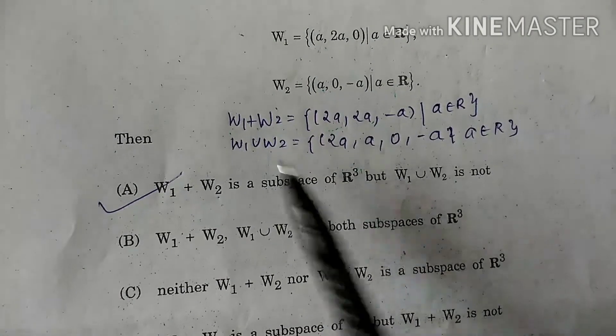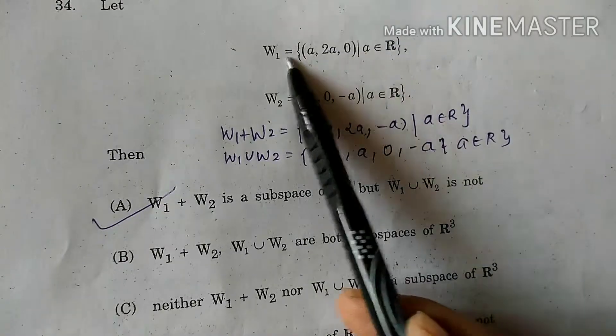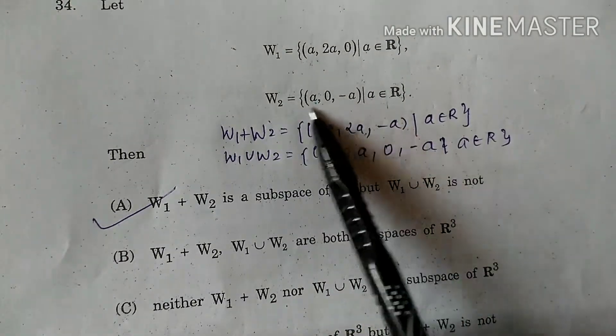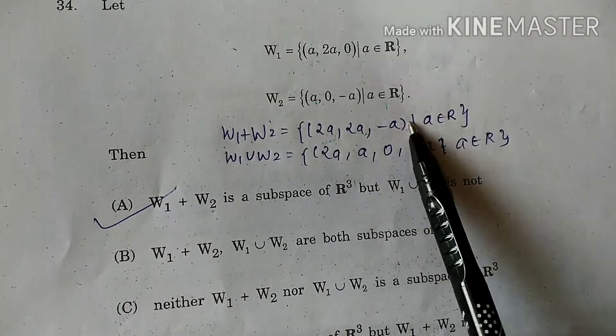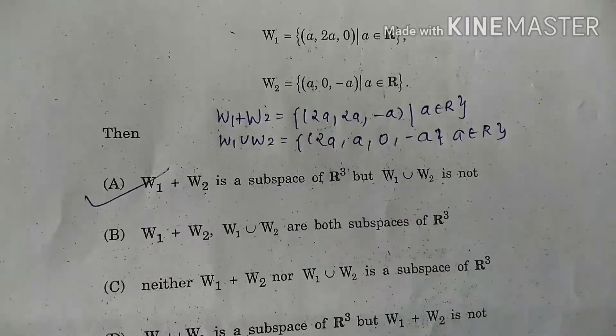Like this, now W1 we can see, here we go 1, 2, 3 - how much dimensions? 3 dimensions. W2 we can see 1, 2, 3 - how much dimensions? 3 dimensions. W1 plus W2 can be 3 dimensions. W1 union W2 can be 4 dimensions. First option says W1 plus W2 can be subspace R³, W1 plus W2 is 3 dimensions.